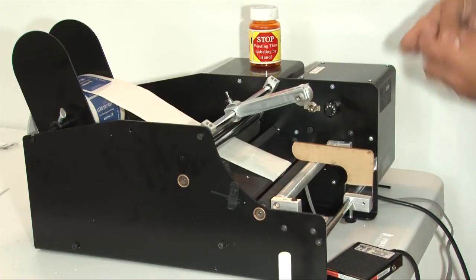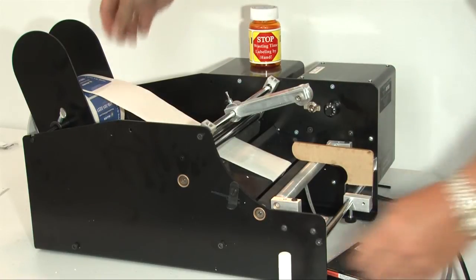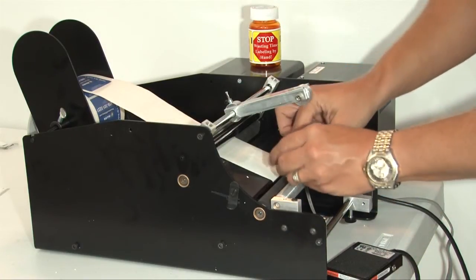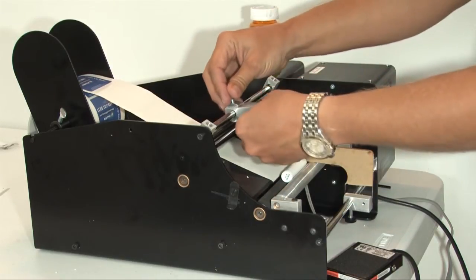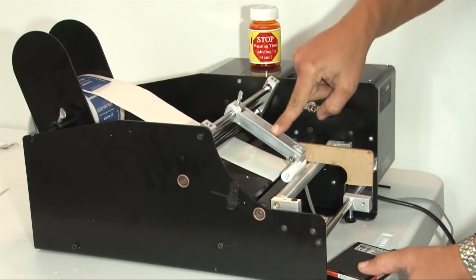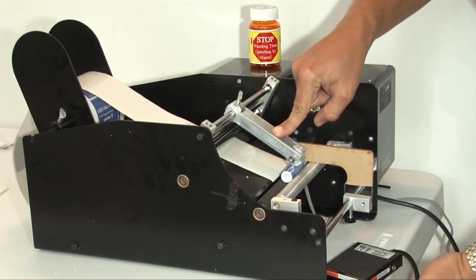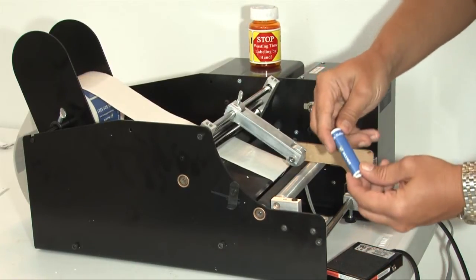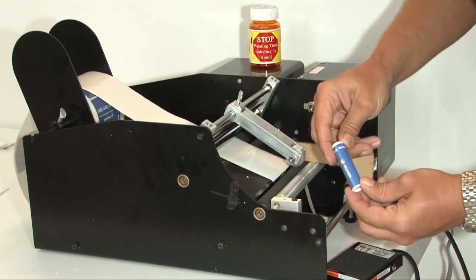Now we're going to take the lip balm tube off and turn on the machine. Because that label is sticking out a little bit, it's going to feed on out. Now we're going to put the tube back in, drop the pressure arm on top of the tube, but now we're going to have to give it a little extra pressure because the lip balm tube is so light and these are pretty stiff labels.